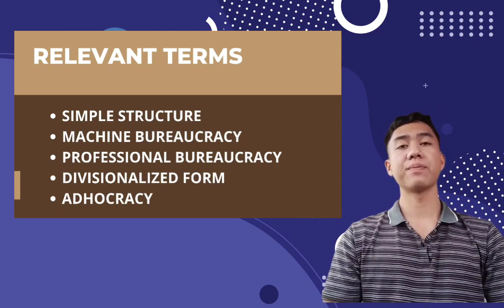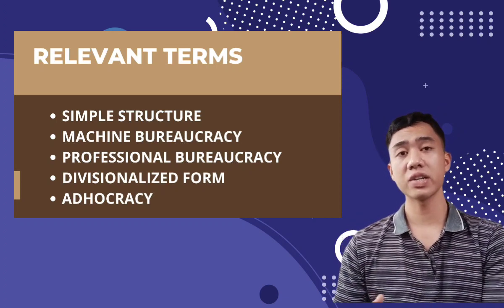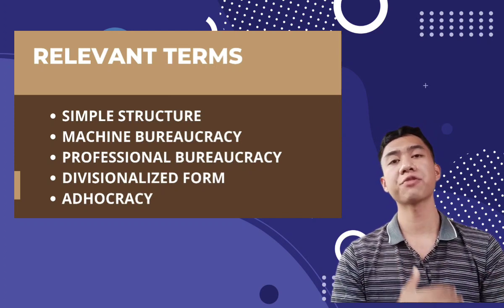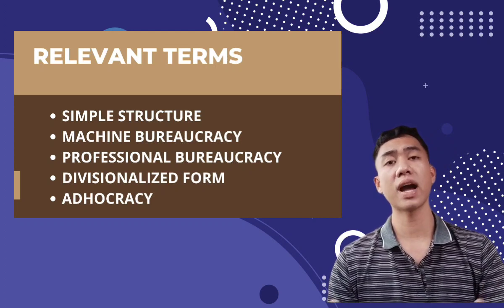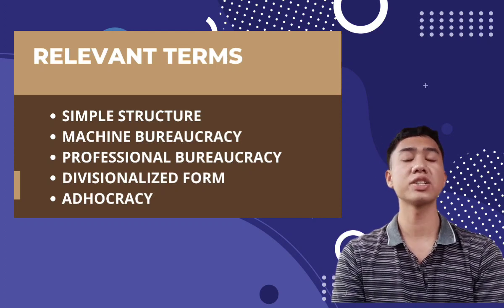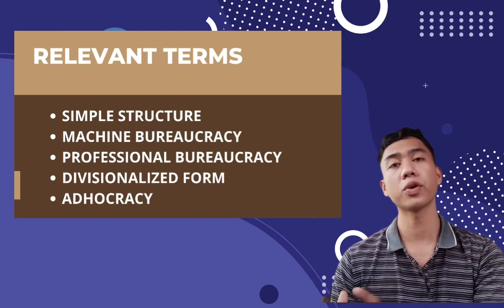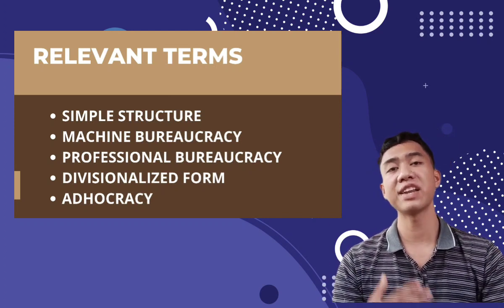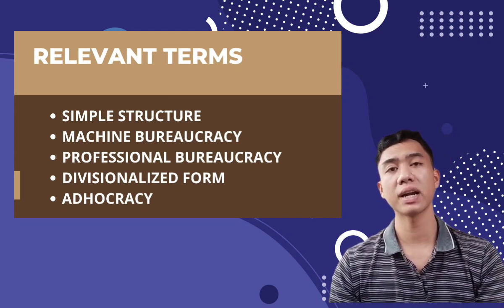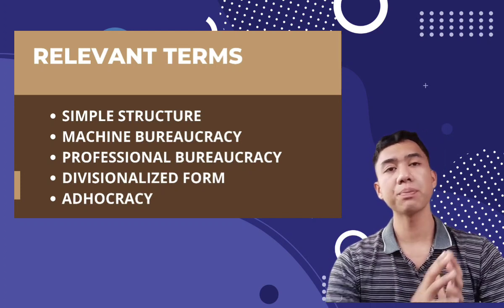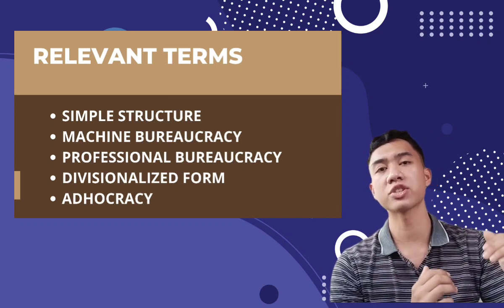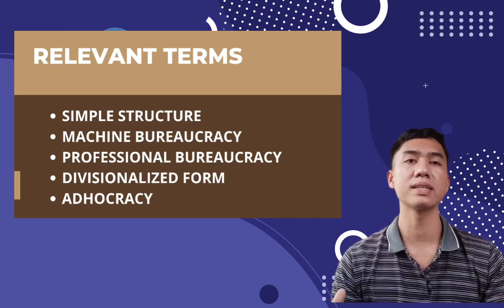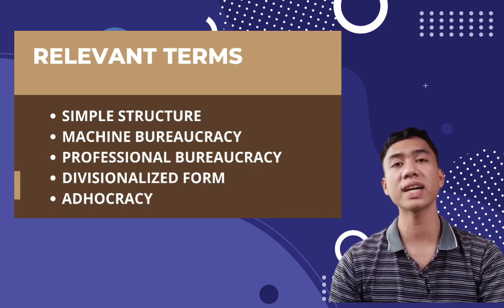We also have the adhocracy. The adhocracy has the support staff as its key part, uses mutual adjustment as a means of coordination, and maintains selective patterns of decentralization. The structure tends to be low in formalization and decentralization. The technostructure is small because technical specialists are involved in the organization's operative core. The support staff is large to support the complex structure. Adhocracy is engaged in non-routine tasks and uses sophisticated technology. The primary goal is innovation and rapid adaptation to changing environments. Adhocracies typically are medium-sized, must be adaptable, and use resources efficiently. Examples include aerospace and electronics industries, research and development firms, and very innovative school districts.